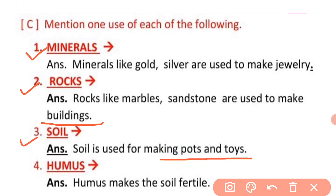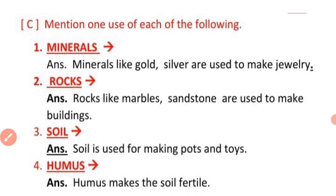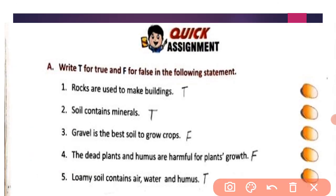Humus makes the soil fertile. Now the next question is the quick assignment, Part A — write T for true and F for false. First: rocks are used to make buildings — yes, it is true.